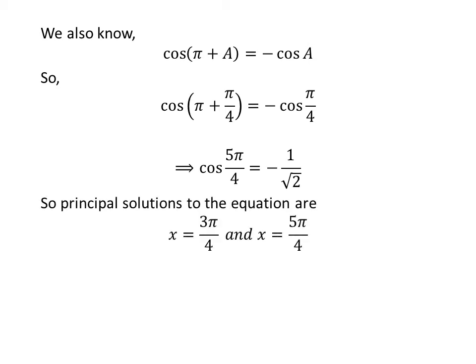So, the principal solutions to the equation cosine of x is equal to minus 1 upon square root of 2 are 3 times pi upon 4 and 5 times pi upon 4.